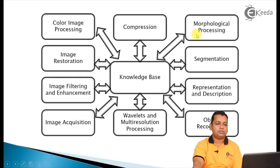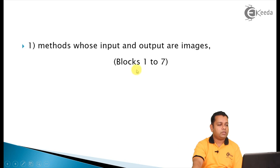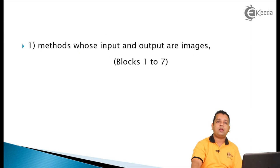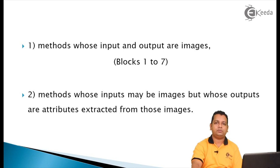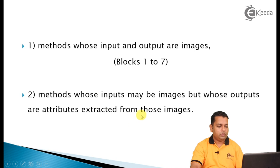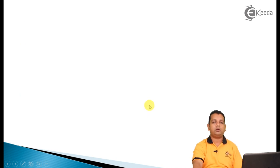More clearly: steps one through seven — where after image enhancement, restoration, compression, and wavelet processing, the output is still an image — belong to the first category. Morphological image processing belongs to both types. Further steps — representation and description, object recognition, and image segmentation — belong to the second category, where we obtain attributes from the image rather than a direct image output.